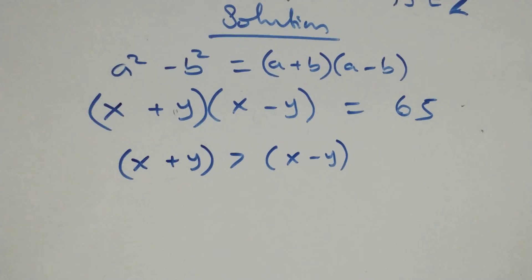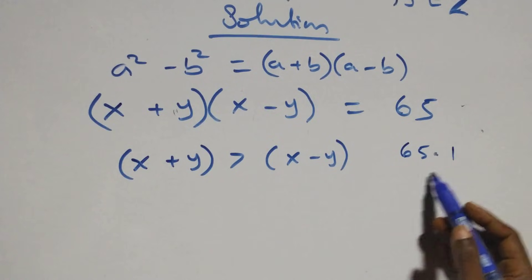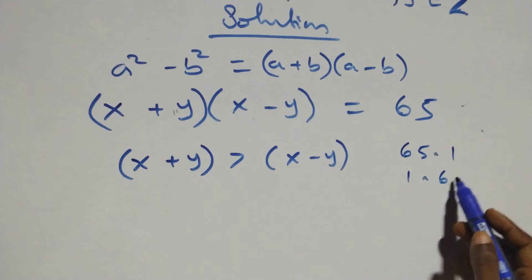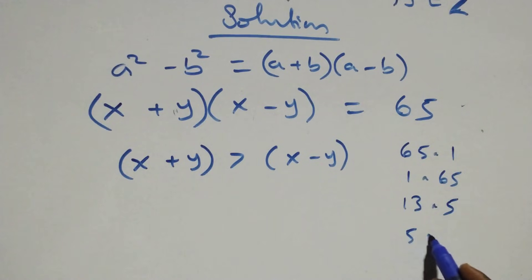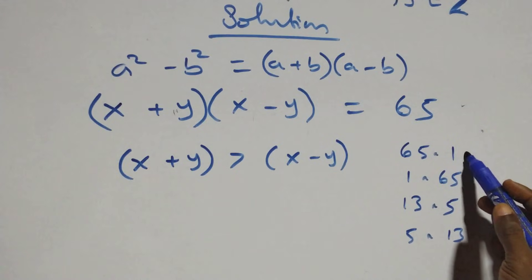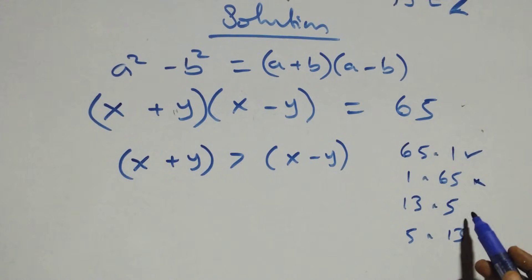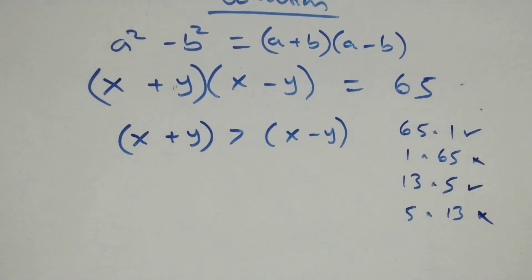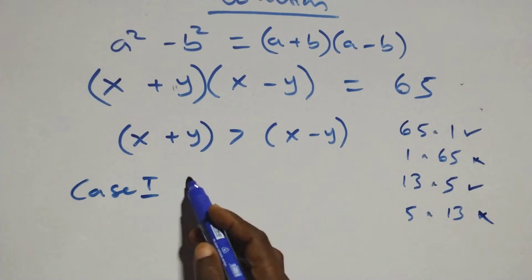When we separate 65 into two factors, the possible factor pairs are: 65×1, 1×65, 13×5, or 5×13. Following the condition that the first factor must be greater than the second, 65×1 satisfies the condition, 1×65 does not; 13×5 satisfies the condition, 5×13 does not. So we have two valid cases.